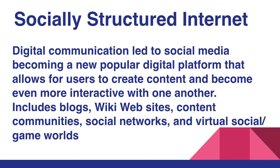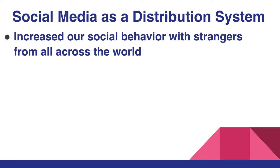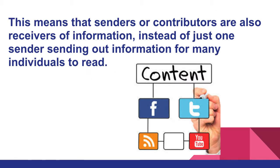Social media includes blogs, wiki websites, content communities, social networks, and virtual social game worlds. All of these types have increased our social behavior with strangers from all across the world that we once would have never had the chance to interact with. Consequently, social media has made a many-to-many distribution system model, meaning that senders — or contributors — are also receivers of information, instead of just one sender sending out information for many individuals to read.